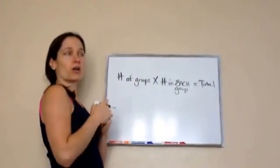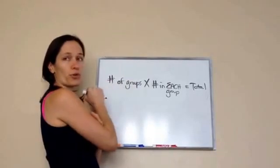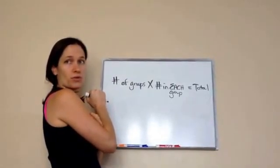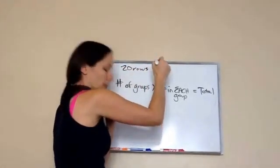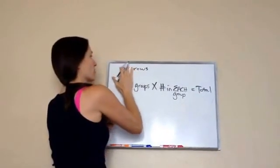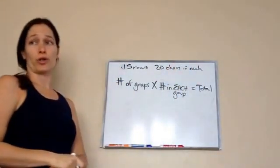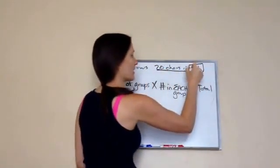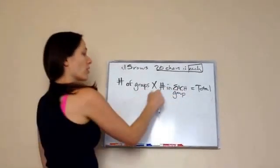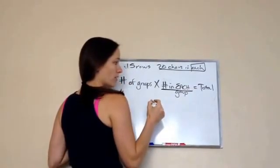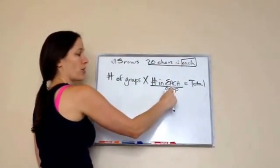So in the problem that we looked at just a minute ago, what would be our number of groups when we're talking about the 15 rows with 20 chairs? 15 rows, with 20 chairs in each row. Did you see a key word? 20 chairs in each row — number in each group. So what's going to go in this spot? The number 20, because it tells us there are 20 chairs in each group. So our groups are rows.